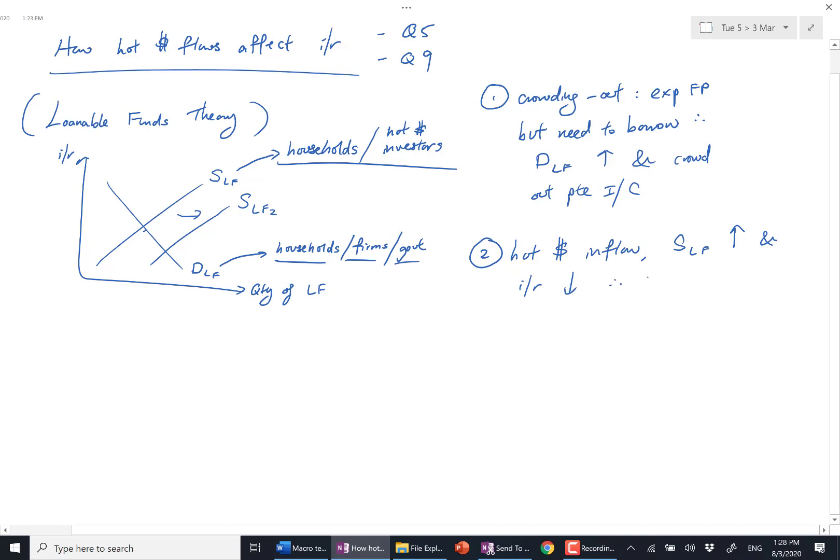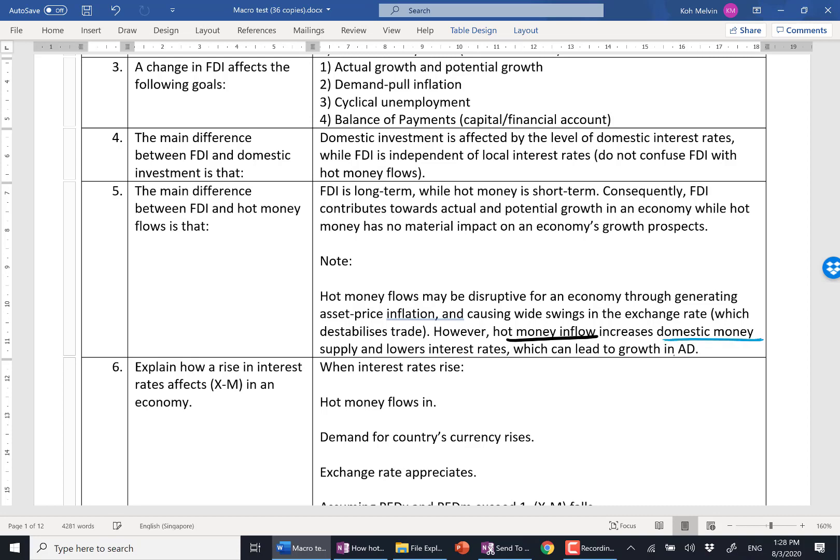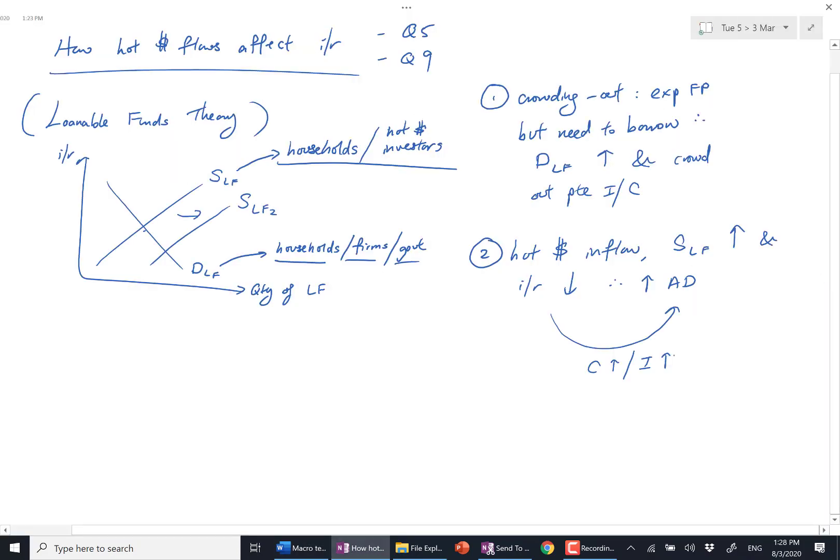Supply goes up to LF2 and interest rates drop as a result. Potentially you can increase AD because consumption rises, investments also rise. This is the indirect mechanism of monetary policy, the indirect channel. That's why under question 5 you see hot money inflow increases domestic money supply - we are talking about supply of loanable funds and lower interest rates, hence rise in AD.